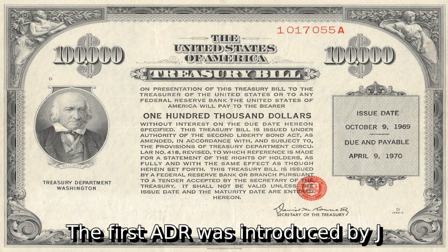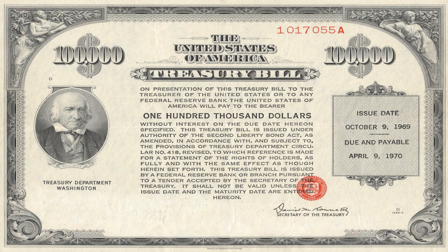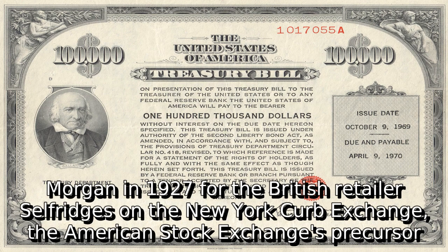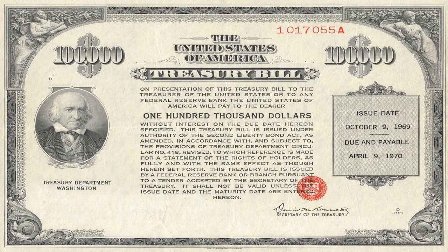The first ADR was introduced by J.P. Morgan in 1927 for the British retailer Selfridges on the New York Herb Exchange, the American Stock Exchange's precursor.